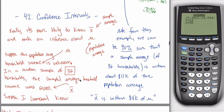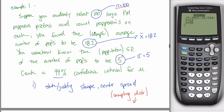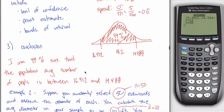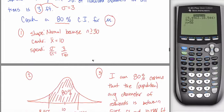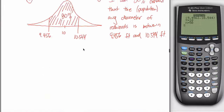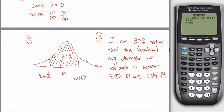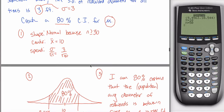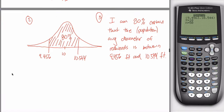One last confidence interval video. What I want to do is add a part four to each of the examples we've done so far, maybe the most recent two. What we're doing in part four is we're being told a specific margin of error, and we're being asked to figure out the sample size. So this is the possible part four in confidence interval questions.